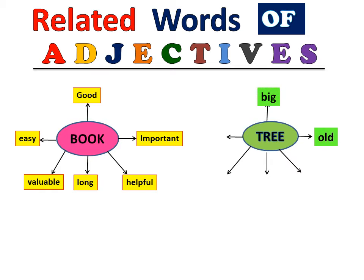Another example: tree. Which adjectives are related to this tree? Big, old, helpful, nice, needy and large. These are adjectives related to tree.